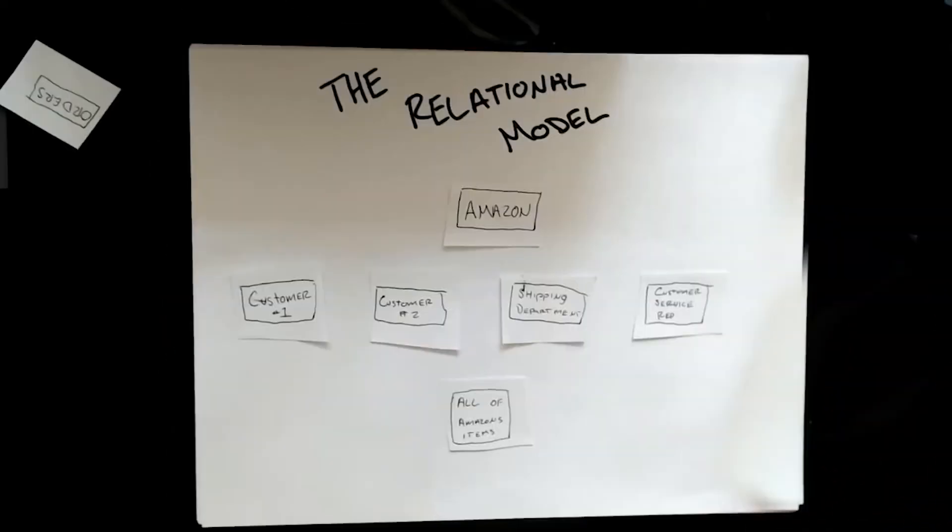The relational model categorizes its information with data related to one another. While searching for an order number will direct the database system to scan all order numbers until a match is found, using the network model would take more time to search for a specific item and instead can use relational data.